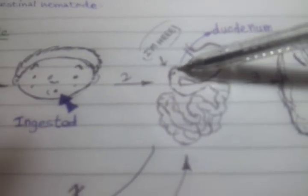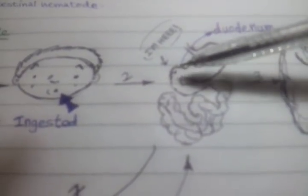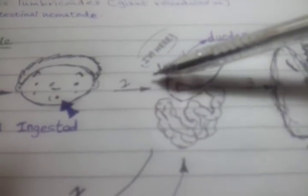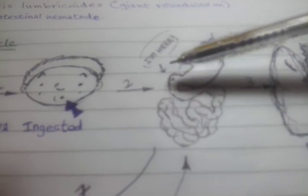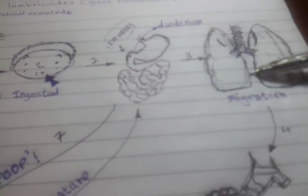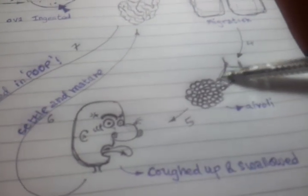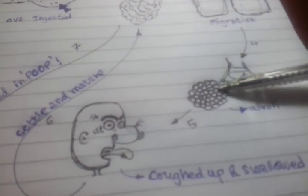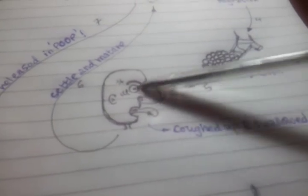When they hatch in the duodenum, they release larvae, and these larvae will penetrate the wall of the duodenum and travel through the blood to the lungs. In the lungs, they get out of the small capillaries, go to the alveoli, and are coughed up and swallowed again.